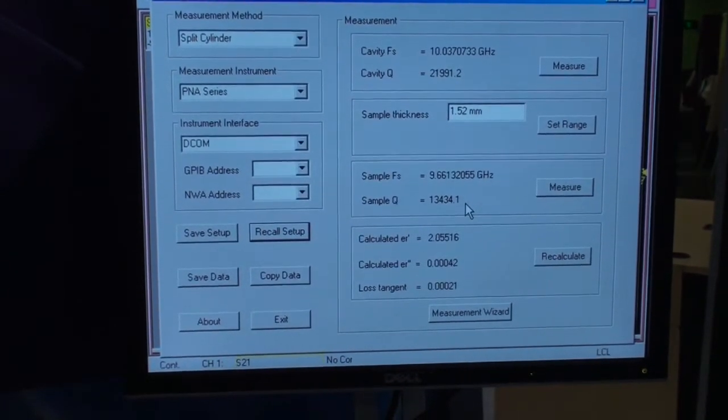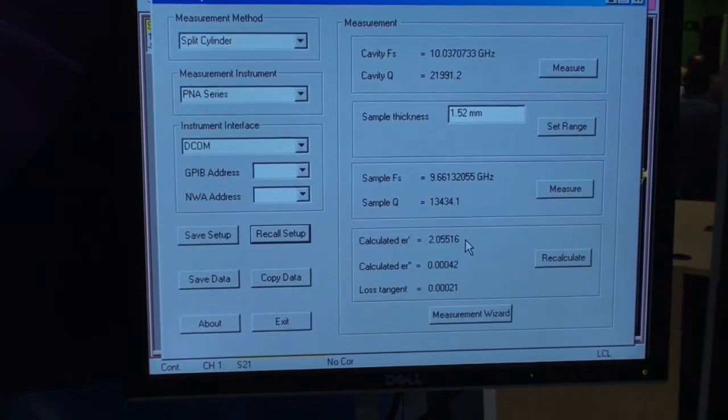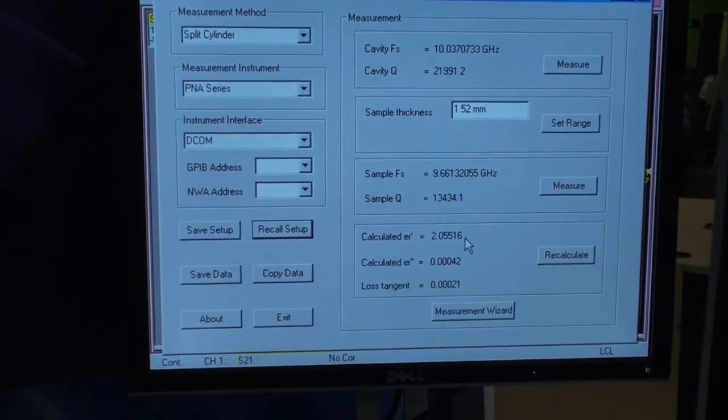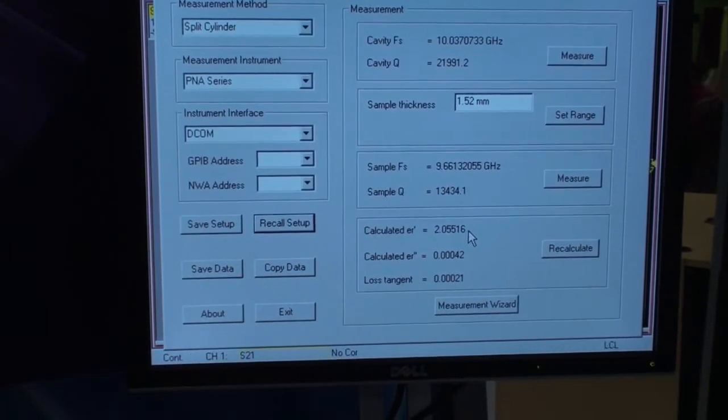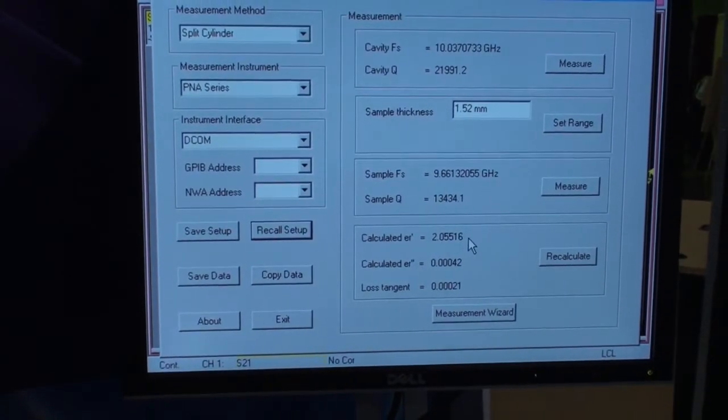And from those measurements, we can calculate permittivity. So this is a thin piece of Teflon brand PTFE and we've calculated the real part of permittivity at close to 2.05 which is expected,